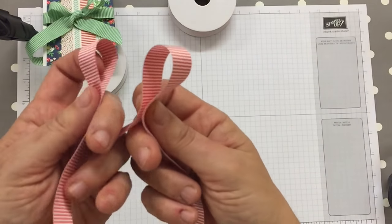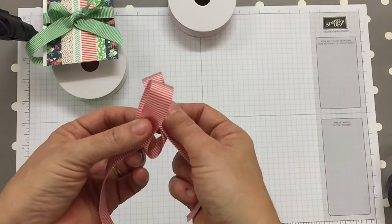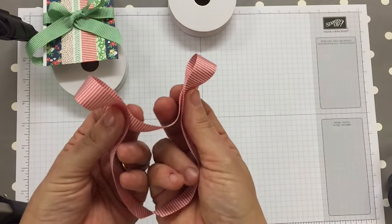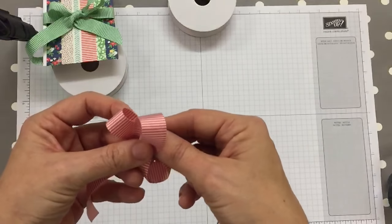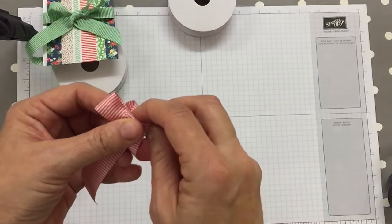So there are my two loops, and I'm going to cross them over each other so the left goes over the right. This loop is going to go around the back and through.